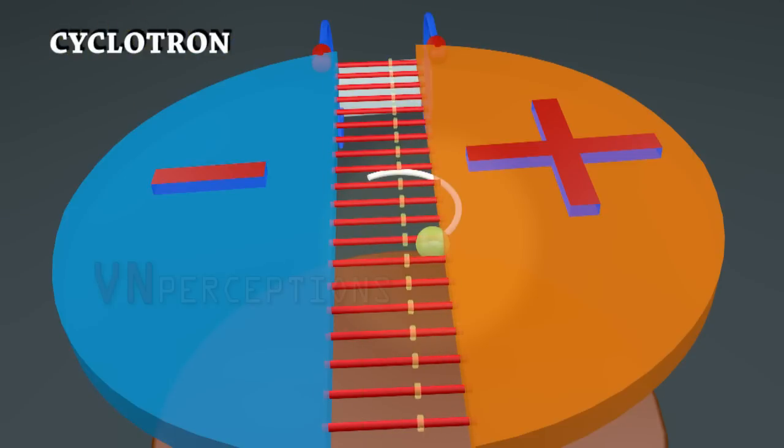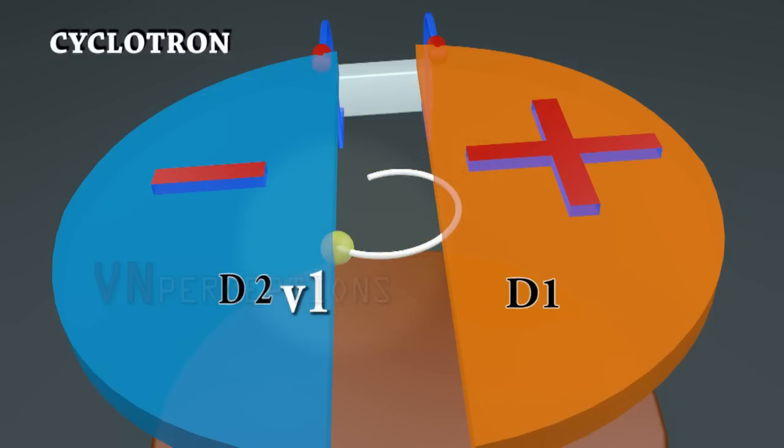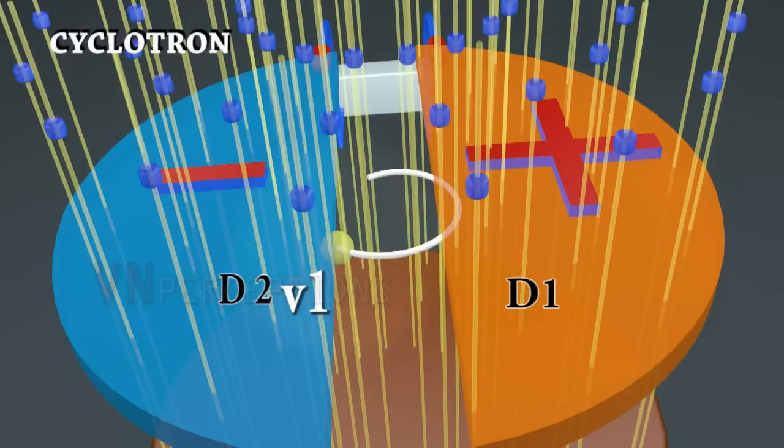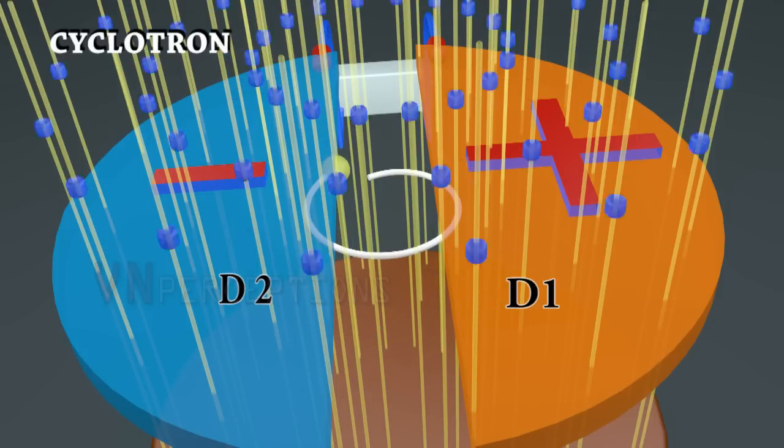The oscillator will change the polarity. When it comes out of D it again comes under the influence of electric field. The electric field accelerates the charged particle to V1. When it enters D2 the velocity would remain constant.